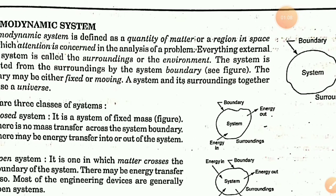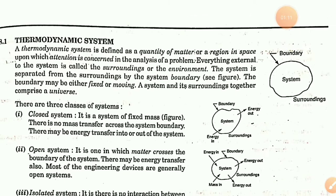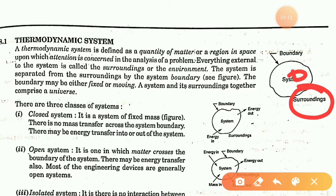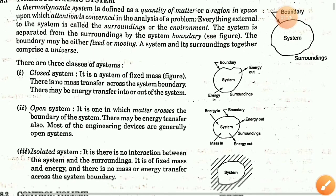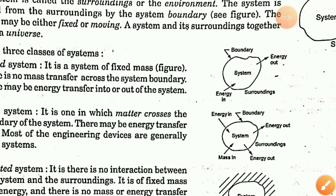The universe consists of the system and its surrounding. The system is in the surrounding, separated by a boundary. Together, the system and surrounding make up the universe.